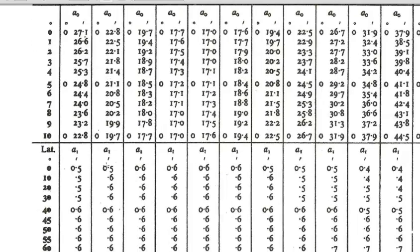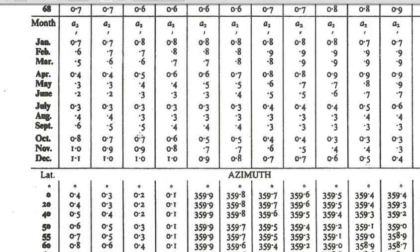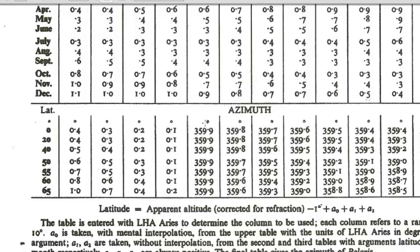Similarly, in the same column, we have to come here in the latitude section, and there is A1 factor. And then, we need to see the month factor, then we need to find out this A2. The last is azimuth, and whatever the latitude is there, and in that column, we see this azimuth.